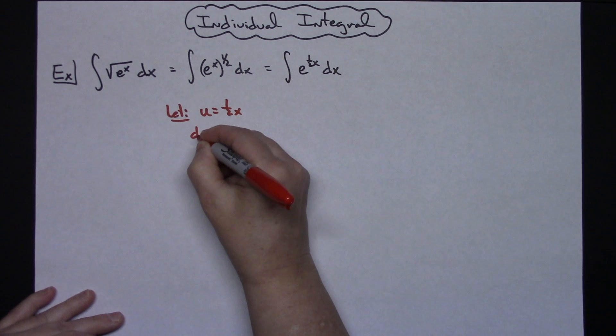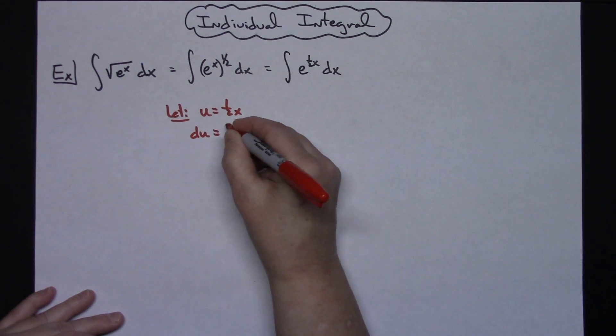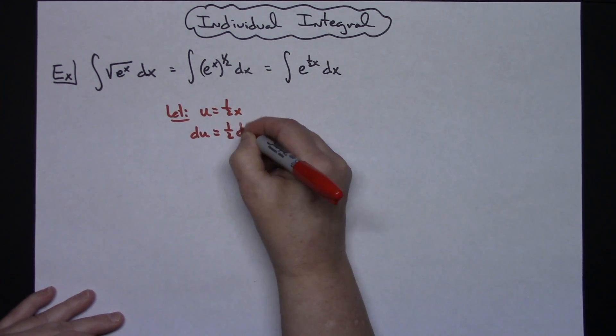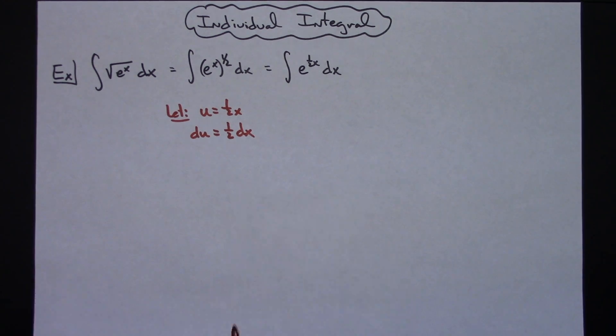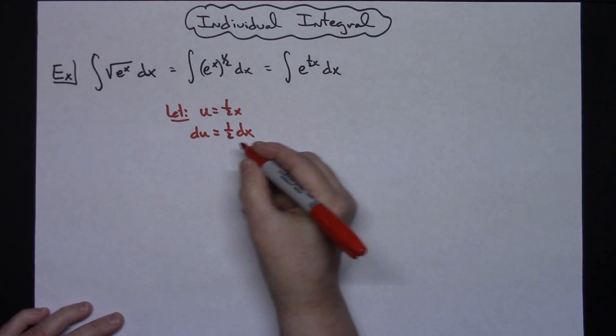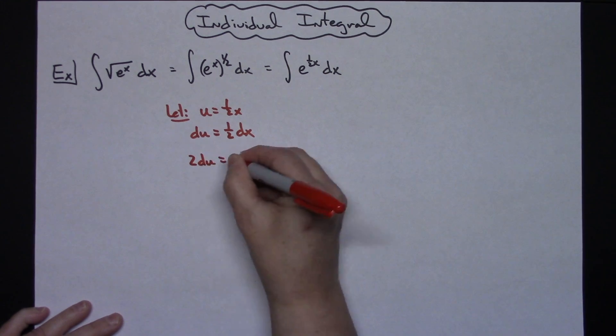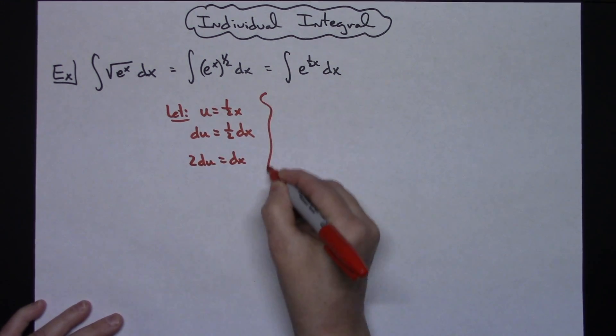I'm going to take the derivative of both sides. du is just going to be one-half dx. Solving for dx means I would multiply both sides by 2. So 2 du is going to be equal to my dx.